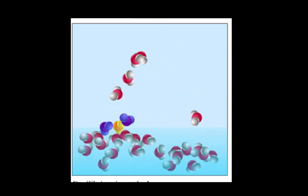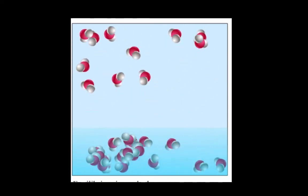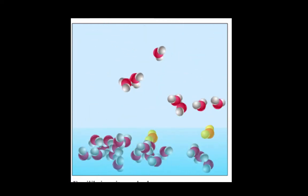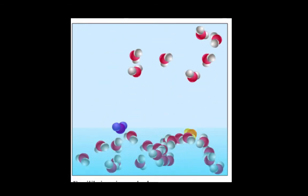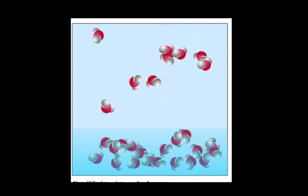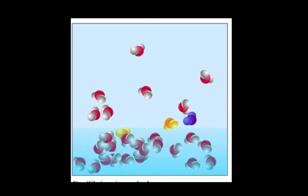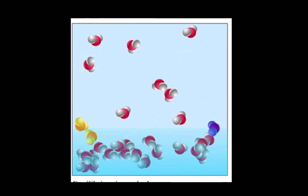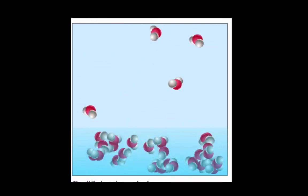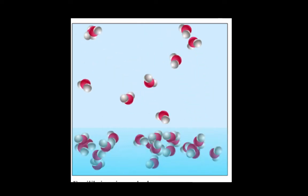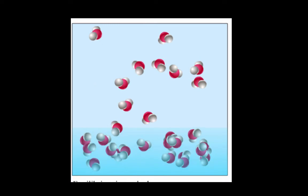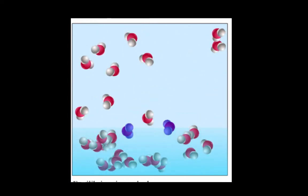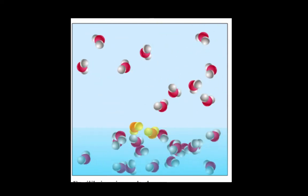Here's an animation of that process. Notice the molecules on top represent water molecules in the gas phase, and the molecules on the bottom represent water molecules in the liquid phase. Occasionally, a water molecule from the liquid phase will gain enough energy to overcome the forces of attraction holding it in the liquid phase, and it will become a gas — the simulation turns that molecule blue. Occasionally, a water molecule from the vapor phase will come close enough to get trapped by the forces of attraction of the molecules in the liquid phase; those molecules are turned yellow in the simulation.